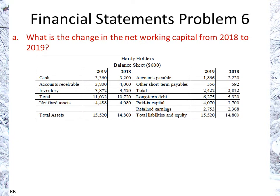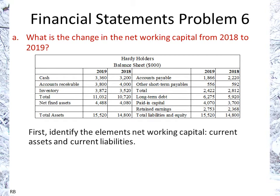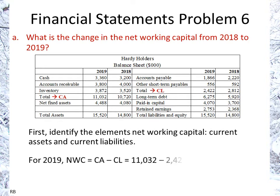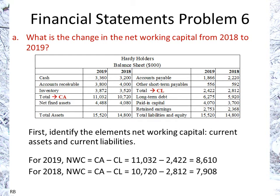Now let's look at the net change in net working capital. Net working capital is current assets minus current liabilities. We identify cash, accounts receivable, and inventory as current assets, and accounts payable plus other short-term liabilities as current liabilities. Net working capital for 2019 is $11,000 minus $2,400, and similarly for 2018. The difference between the two years gives us $702.